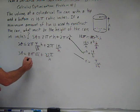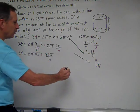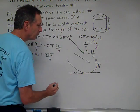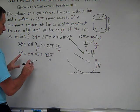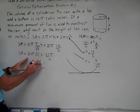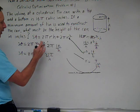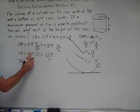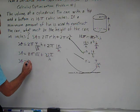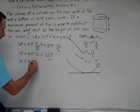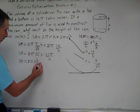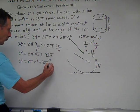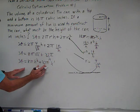Now we differentiate to find the minimum value. At the minimum, the tangent line will be horizontal, so we set the derivative equal to zero and solve for h. We rewrite in calculus-friendly form: SA = 8π·h^(1/2) + 32π·h^(-1). Applying the power rule: SA' = (1/2)(8π)h^(-1/2) + (-1)(32π)h^(-2).